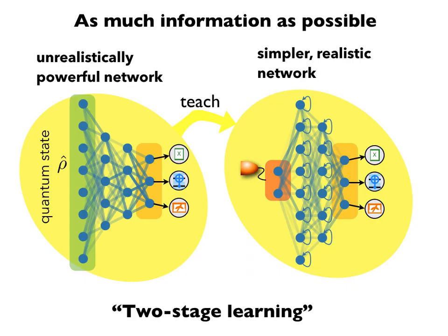We also put in as much information as possible, since measurements are sparse — happening only occasionally and giving only one bit of information. We found it much better to do reinforcement learning with a network fed the full quantum state at every moment. That's unrealistic for a real experiment, so once this network has discovered a really good strategy, we set up a second network that acts only based on measurements — a realistic network applicable in experiments. We use the first trained network as a teacher to teach the second to mimic the same strategy. This works surprisingly well; we call it two-stage learning, and we think it can be applied in many other reinforcement learning settings.